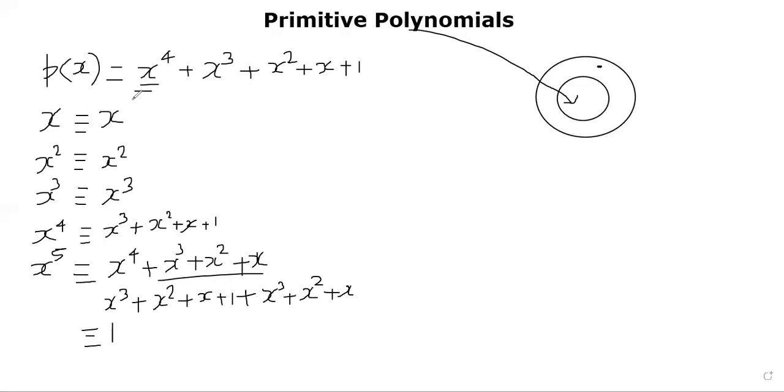We are not able to generate all possible polynomials of degree 3. For example, we didn't generate x cube plus x. We can't generate x cube plus x using this p of x as a base irreducible polynomial. It is not generating all possible third degree polynomials. That's the reason why it is just irreducible.